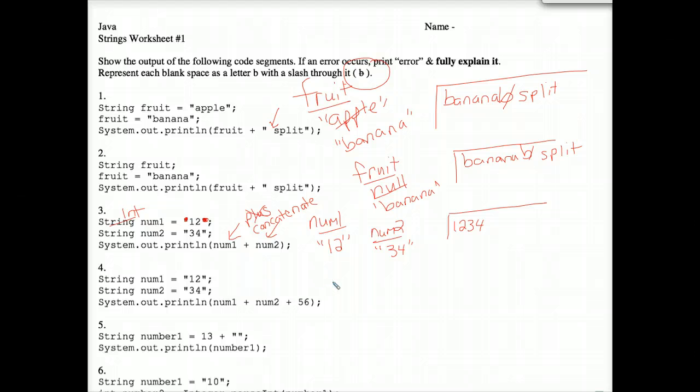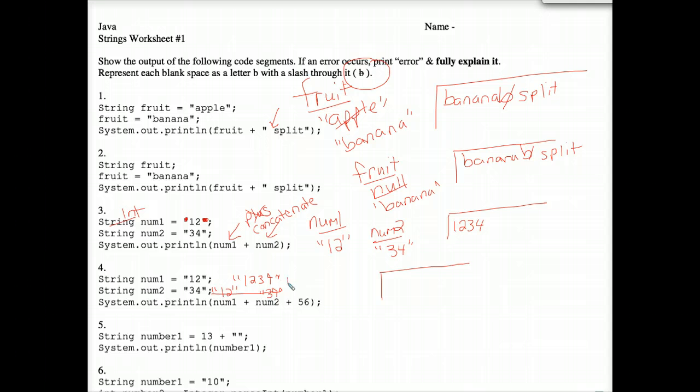Number four. This is an interesting one. I don't think they put this on the AP exam, but it does probably work from left to right here. So we have the string one, two being concatenated with the string three, four as above. So as the computer does that part of it, that simplifies to simply the string one, two, three, four. And now we see that has a plus with a plus 56.